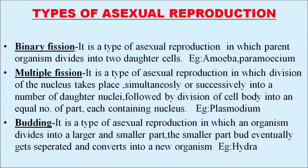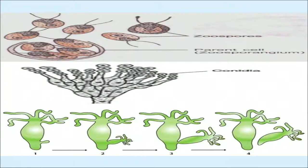In multiple fission, division of the cell body follows into an equal number of parts, each containing a nucleus. An example of this is Plasmodium. Simplified: in multiple fission, a single organism divides into many organisms. Next is budding — a type of asexual reproduction in which an organism divides into two unequal parts: a larger and a smaller part. The smaller part, called a bud, eventually gets separated and converts into a new organism. The example of budding is Hydra.